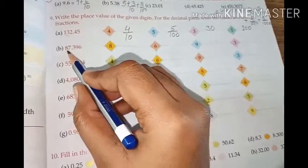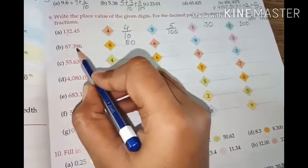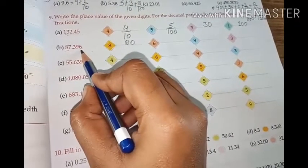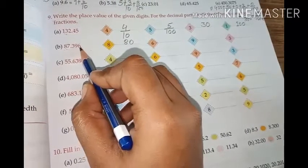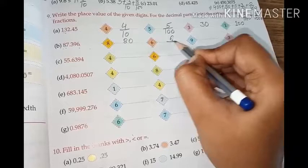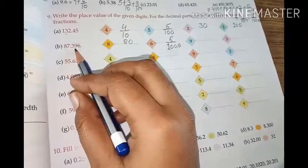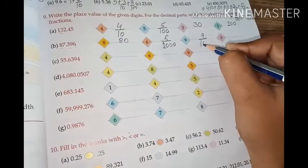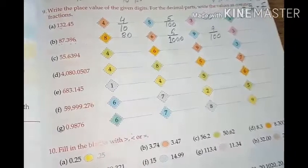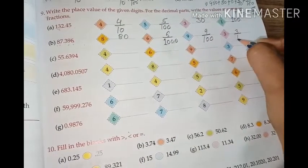87.396. 8 is 80. 6's place value, what will happen? Decimals will happen in common fractions. Which place is 6? 1, 2, 3rd place. So 6 as it is, and divided by 1, 3 zeros you have to put, so 6 by 1000. 9 is at second place decimals. 9 is at second place, 9 upon denominator, you have to write 100. Then for 3, it will be 3 by 10.